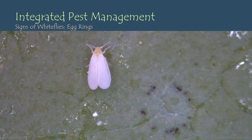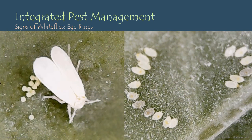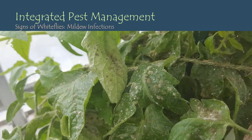Another very visible sign of whiteflies — even if you don't see the insects themselves — is the presence of egg rings. Whiteflies typically lay eggs by positioning their head in a fixed location and pivoting their body around that point as they deposit eggs, leading to the formation of semicircles or full circles of eggs on your plant leaves.